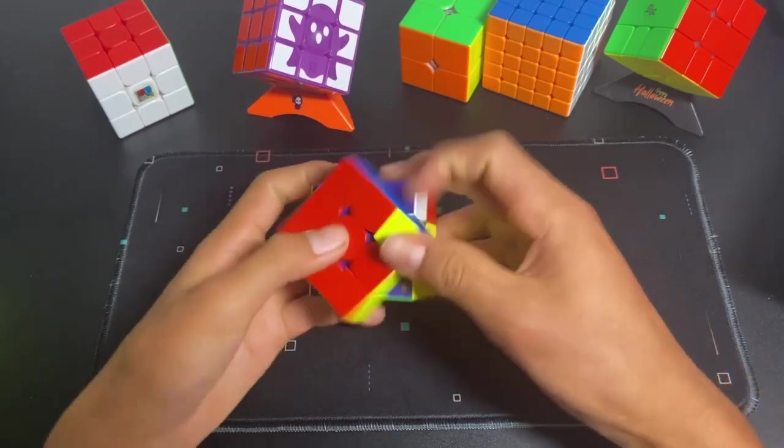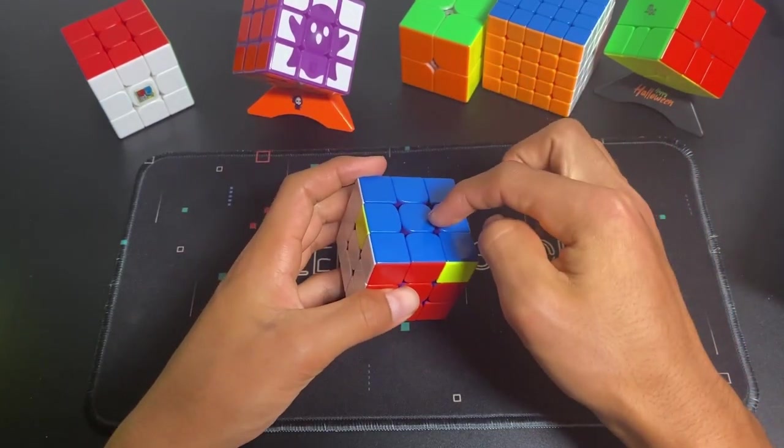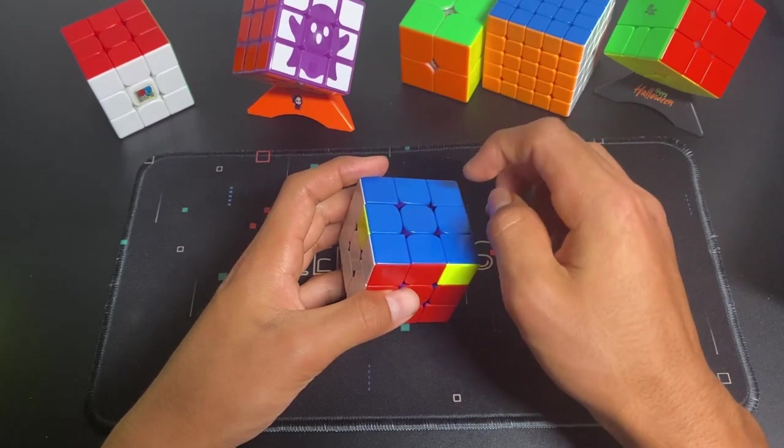If you see this case, do that algorithm, and it's solved. You should be able to solve every single one of the cases in just one algorithm. And that is called learning full OLL.